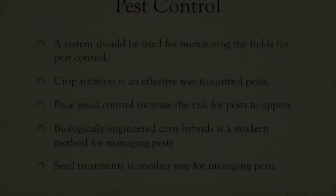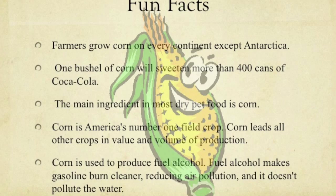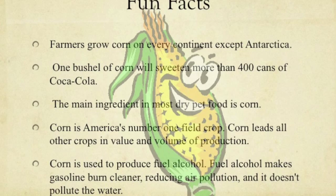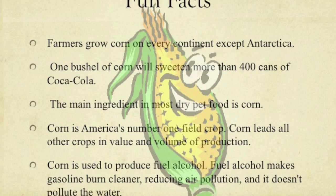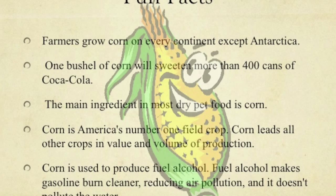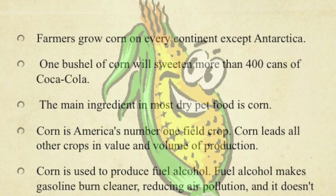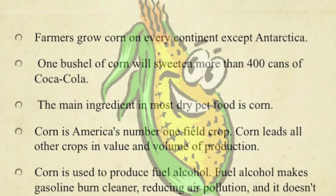Here are some fun facts about corn. Farmers grow corn on every continent except Antarctica. One bushel of corn will sweeten more than 400 cans of Coca-Cola. There are about 800 kernels in 16 rows on each ear of corn. The ear of corn is actually part of the corn plant's flower. The main ingredient in most dry pet food is corn. Corn is America's number one field crop, leading all other crops in value and volume of production. A pound of corn consists of approximately 1,300 kernels. Corn is also used to produce fuel alcohol, which makes gasoline burn cleaner, reducing air pollution.